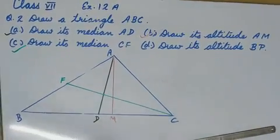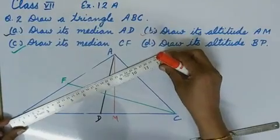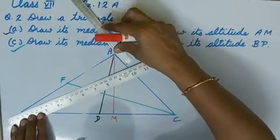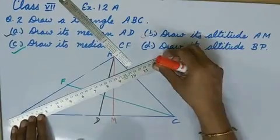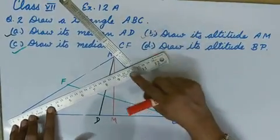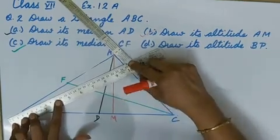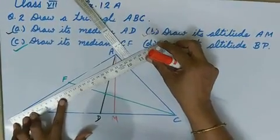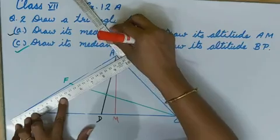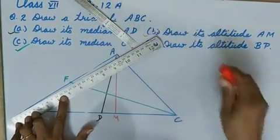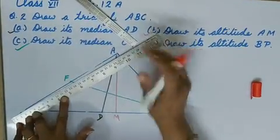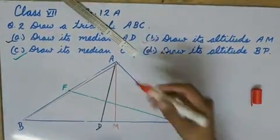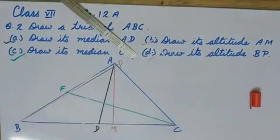D point, draw its altitude BP. For altitude, again, we will make the perpendicular to the base AC. When we are keeping the scale, be careful. We can see here it is not perpendicular. We will shift it till it makes perpendicular. Joining the vertex B. Hence, BP is the required altitude.